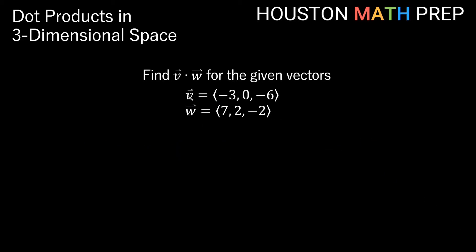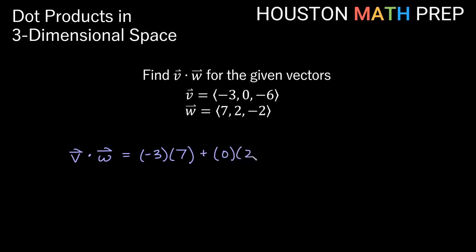Let's do one more. Vector V is (-3, 0, -6) and vector W is (7, 2, -2). V dot W is the product of first components: -3 times 7, plus 0 times 2, plus -6 times -2. That gives us -21 plus 0 plus 12, which equals negative 9 for this dot product.